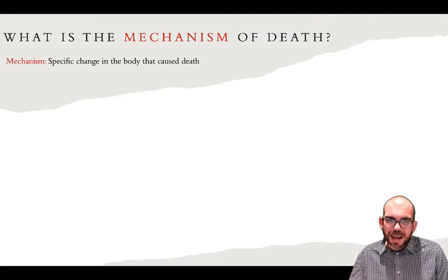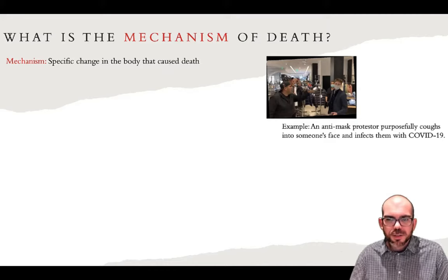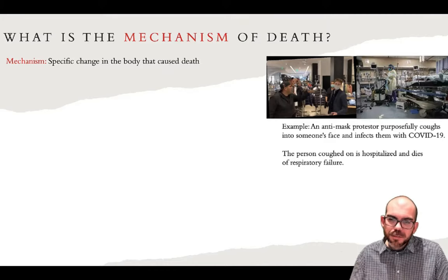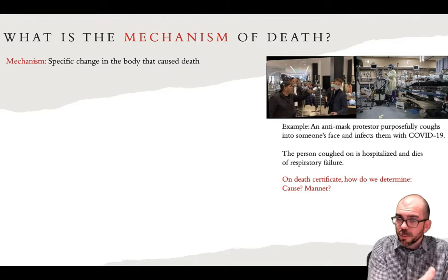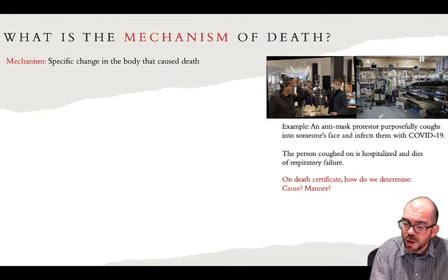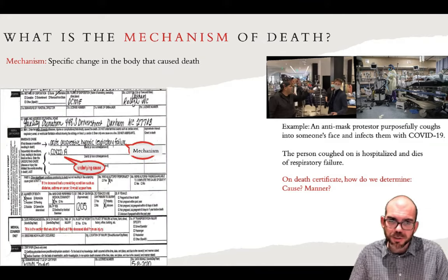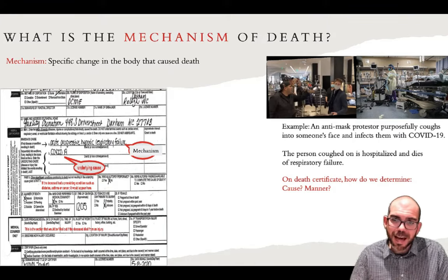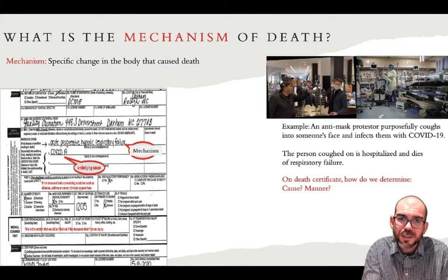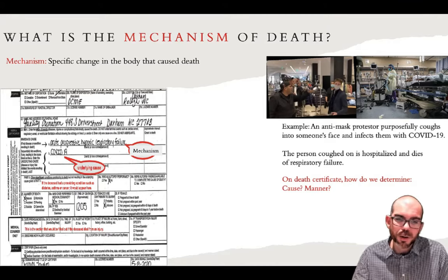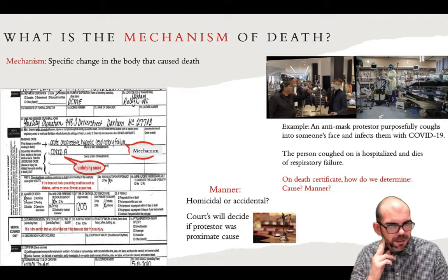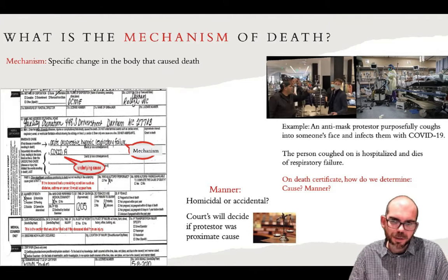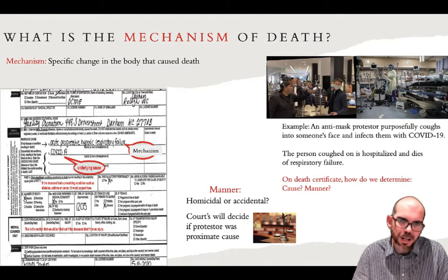Another term used to describe death is the mechanism — a specific change in the body that caused the death. For example, an anti-mask protester purposefully coughs into someone's face, infecting them with COVID-19. The individual is hospitalized and dies of respiratory failure. On the death certificate, the underlying cause is identified as COVID-19, which led to the mechanism: acute progressive hypoxic respiratory failure — the lungs failing to deliver oxygen to the rest of the body. The mechanism is that specific biological change that caused the death.